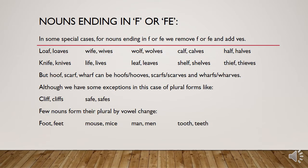Next we have nouns ending in F or FE. In some special cases, for nouns ending in F or FE, we remove the F or FE and add 'VES'. Like 'loaf' becomes 'loaves', 'wife' becomes 'wives', 'wolf' becomes 'wolves', 'calf' becomes 'calves', and 'half' becomes 'halves'. Further examples include 'shelves' and 'thieves'. However, for 'hoof', 'scarf', and 'wharf', we can either add S or remove F and add VES — both forms are correct.